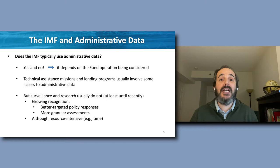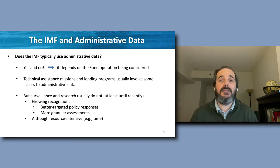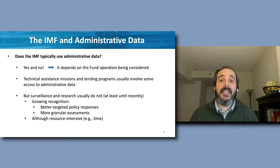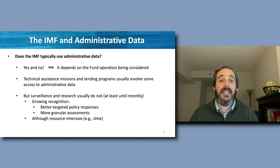Does the IMF typically use administrative data? Yes and no — it really depends on the fund operation being considered. Technical assistance missions and lending programs usually do involve some access to administrative data, because to provide assistance on improving the efficiency of a given policy or designing a new one, IMF staff should be able to access granular data collected by government agencies. Likewise, assessing whether lending program conditions are being met also requires accessing granular government data. In both cases, it is the member country that reaches out to the Fund, so these are demand-driven in nature and governments are usually well inclined to grant access to their data.